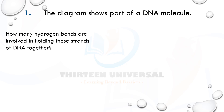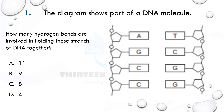The first question: the diagram shows part of a DNA molecule. How many hydrogen bonds are involved in holding this strand of DNA together? Pause the video and try it. You can see adenine, thymine, guanine — complementary base pairs. Two hydrogen bonds are formed between adenine and thymine, three hydrogen bonds between guanine and cytosine. Counting: two plus three is five, five plus three is eight, eight plus three is eleven.